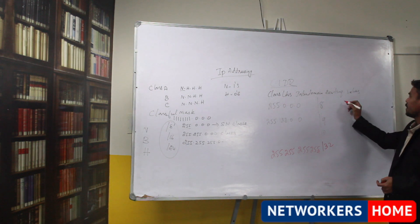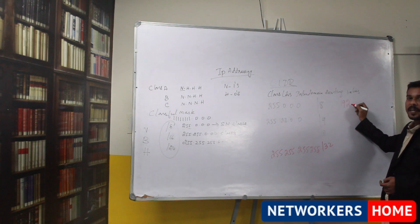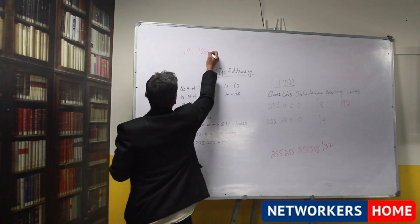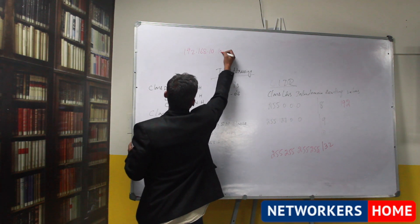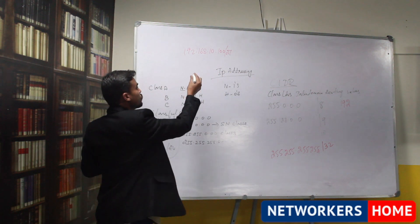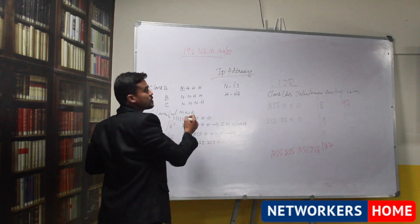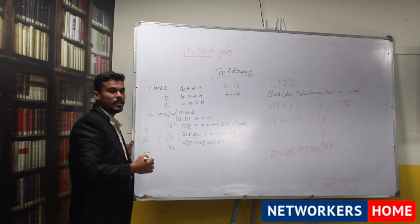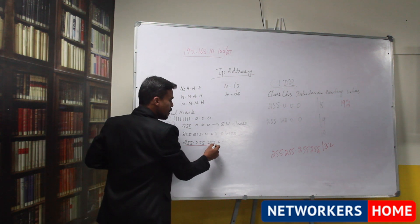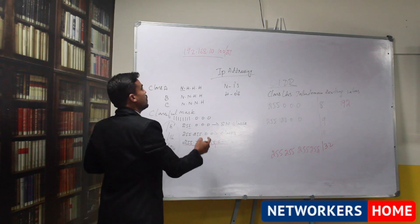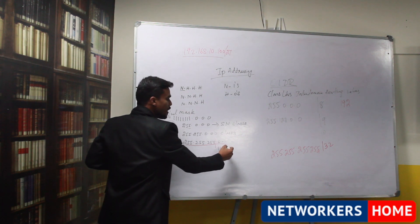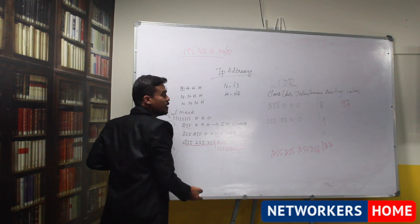Suppose I am taking an example of an IP address 192.168.10.100 slash 27. In this 27, the given IP address is class C IP address. What is the default subnet mask of class C? It is 255.255.255.0, already 24 bit is set but they are given 27. So you are borrowing 3 bits, remaining 5 bits are 0.